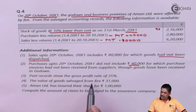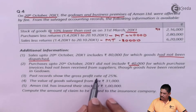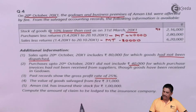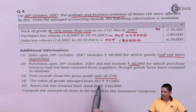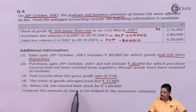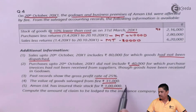Past records show a gross profit rate of 25%, so you need not prepare a memorandum trading account for the last year. The value of salvage from fire is 31,000, which we will minus when preparing the statement of claim. Amal Limited has insured their stock for Rs. 1,00,000 — that is your policy amount.